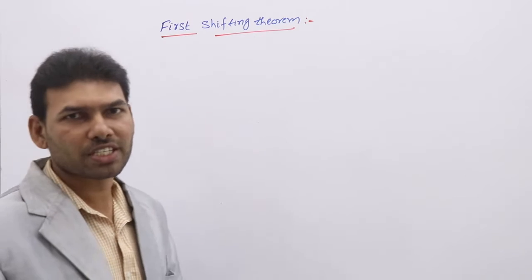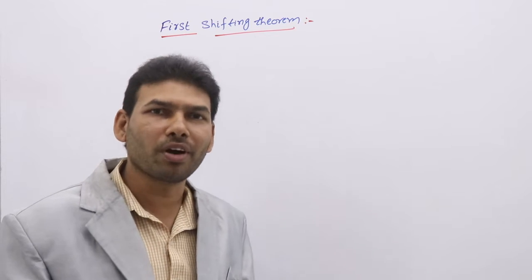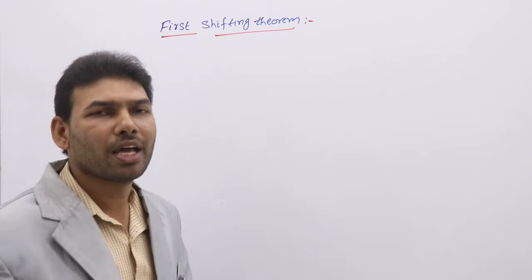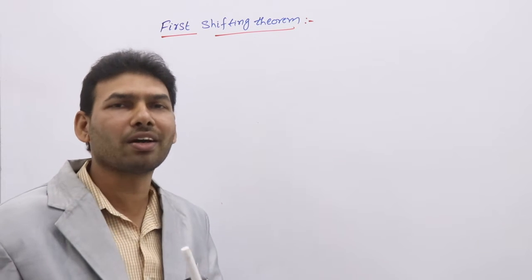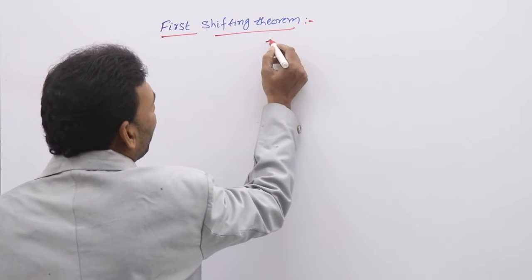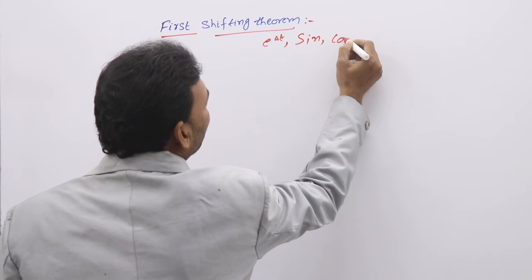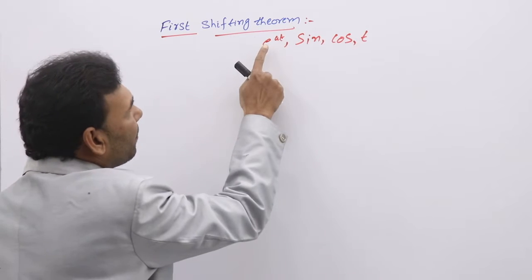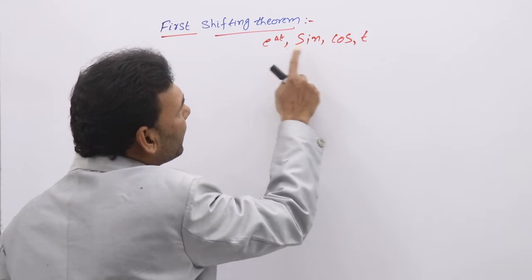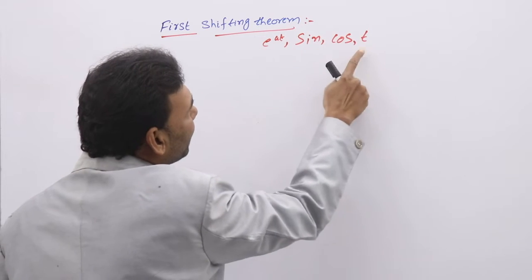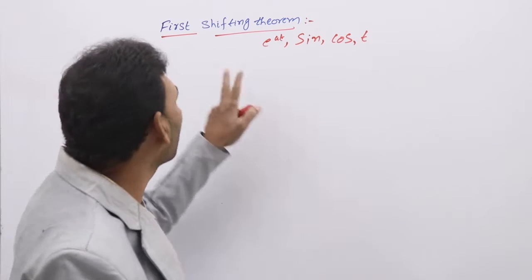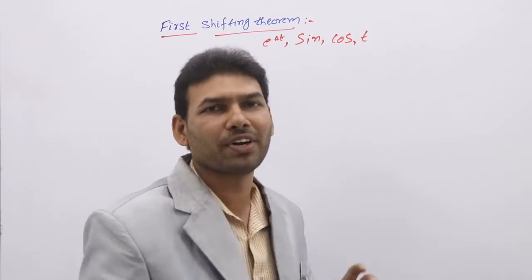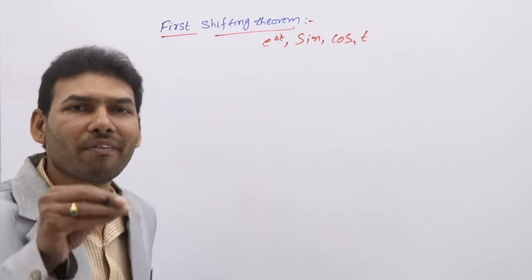Laplace Transform First Sifting Theorem. We are going to apply the First Sifting Theorem whenever e^(at) is in product with some other function. Generally, in Laplace we discuss two types of functions: e^(at)·sin(t) and e^(at)·cos(t). So whenever e^(at) is in product with some other function, you have to choose the First Sifting Theorem to evaluate the Laplace Transform.